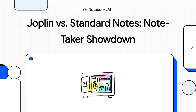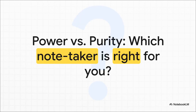In today's explainer, we're going to tackle Joplin versus Standard Notes. Both of these are really powerful, secure, open-source note-taking apps with fantastic communities. But they have totally different ideas about what a note-taking app should even be. The choice between them really boils down to one simple question: are you looking for a super powerful, feature-packed tool that you can tweak and customize forever? Or do you value simplicity and ultra-secure purity above everything else? Your answer is going to point you directly to the perfect app.